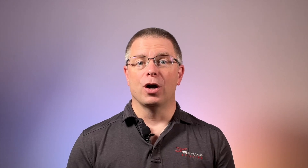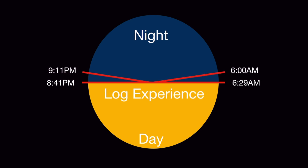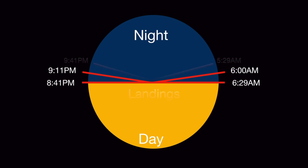So we've explored three different definitions of night, and each one has a different duration. In Wichita, we need to have our position lights on from 8:41 p.m. until 6:29 a.m. We can log private pilot or commercial experience from 9:11 p.m. until 6:00 a.m., and we need to do our night currency landings between 9:41 p.m. and 5:29 a.m.